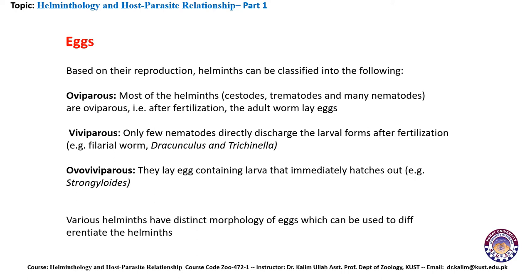The next form is viviparous: only a few nematodes directly discharge the larval form after fertilization. Examples include filarial worms, Rhabdonema, and Trichinella. The last form is ovo-viviparous: they lay eggs containing larvae that immediately hatch out. An example includes Strongyloides. Various helminths have distinct morphology of the eggs, which can be used to differentiate the helminths.